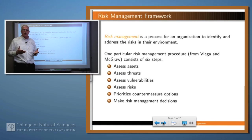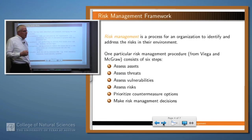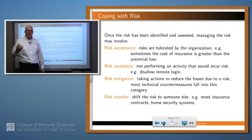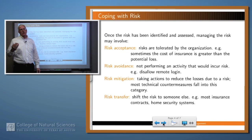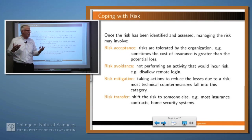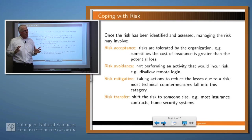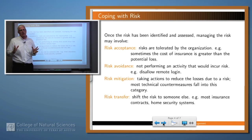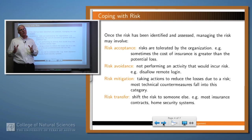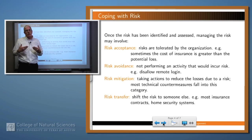What do those management decisions look like? Typically there are four things you can do with any risk. You can either accept it — meaning that there's nothing you can do about that risk, or the cost of doing something about it is too high. So imagine driving: every time you drive on the streets, there's always a risk that you'll have an accident. And yet you accept that risk because the alternative is to stay at home and not do certain things that you want to do. So that's a risk that you accept.